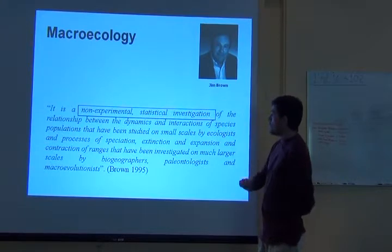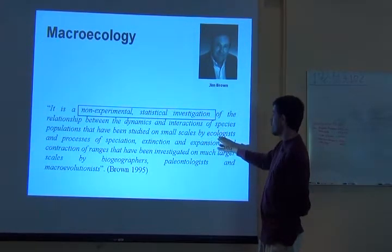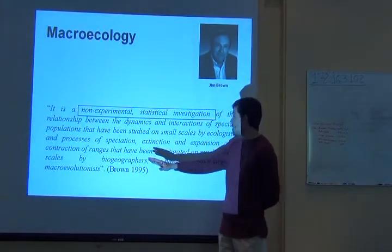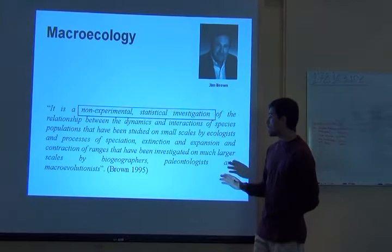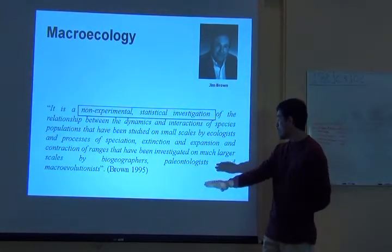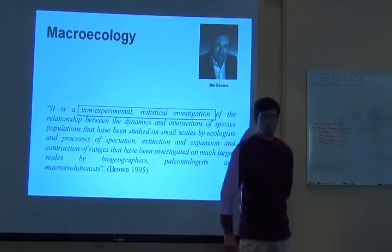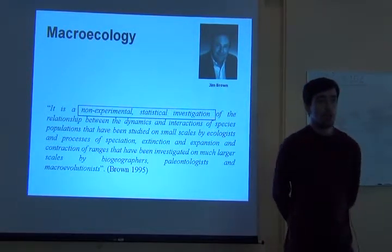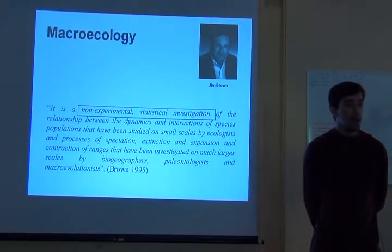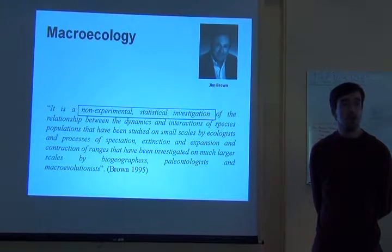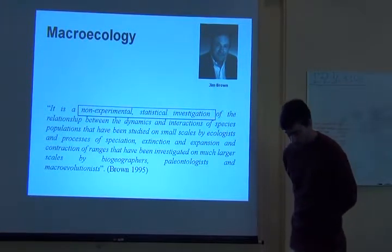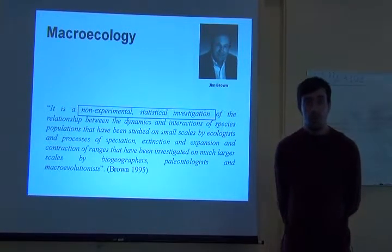You usually need to collect data over decades so that you can actually look at these patterns from a broader perspective. It's a study of populations studied in small scales by ecologists, and the processes of speciation, extinction, expansion, and range contraction investigated at much larger scales by biogeographers, paleontologists, and macroevolutionists. Macroecology is the meeting place between ecology and biogeography. It takes decades to compile datasets, and the datasets we're going to use today are the result of the work of probably hundreds of people in the field.